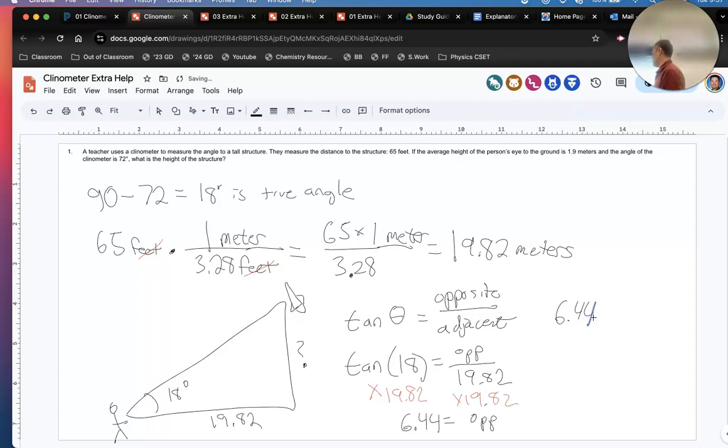Where did 6.44 come from? Sean, tell us what you did. So try on your calculator. Hit tan, 18, in parentheses, times. What do we multiply up here? This is opposite.